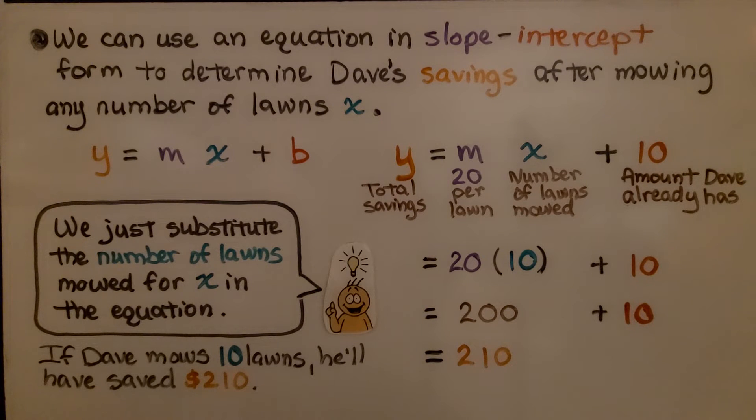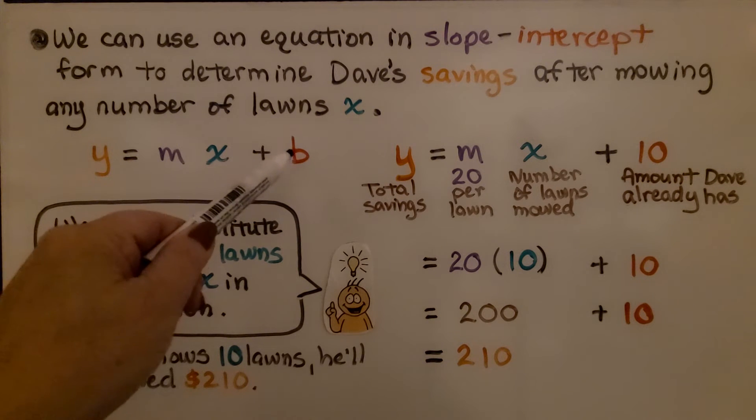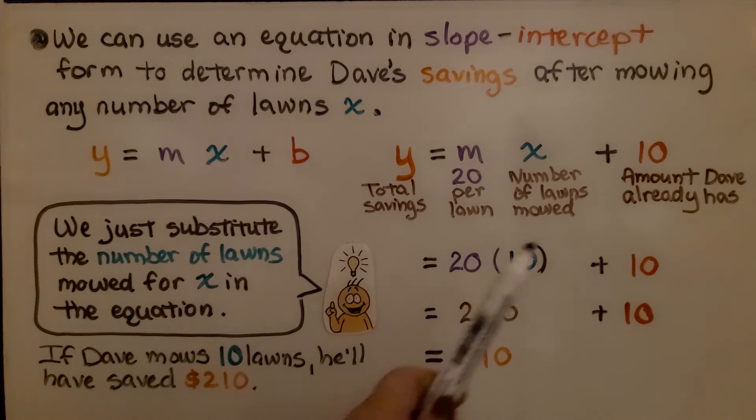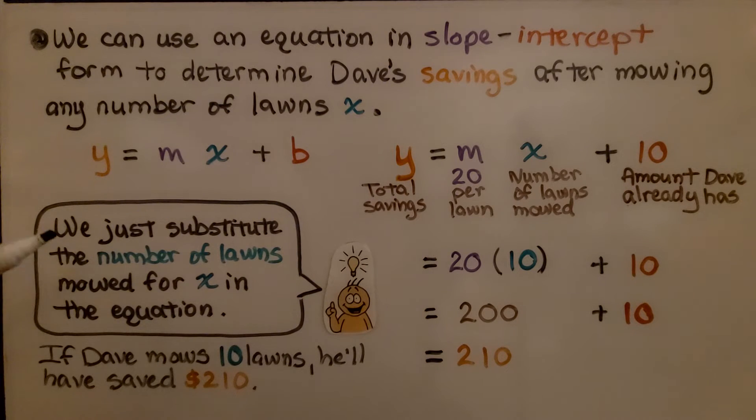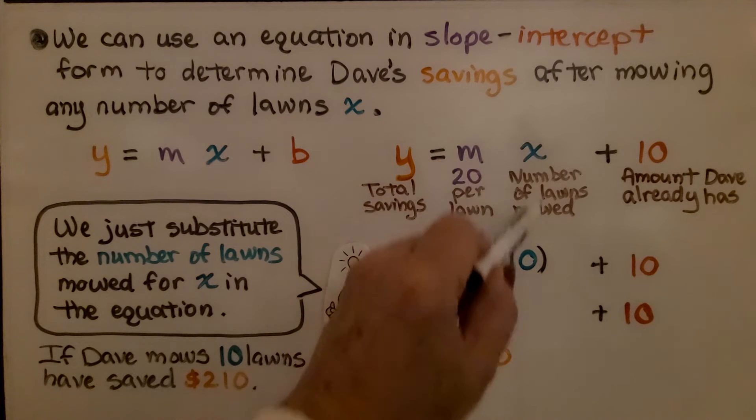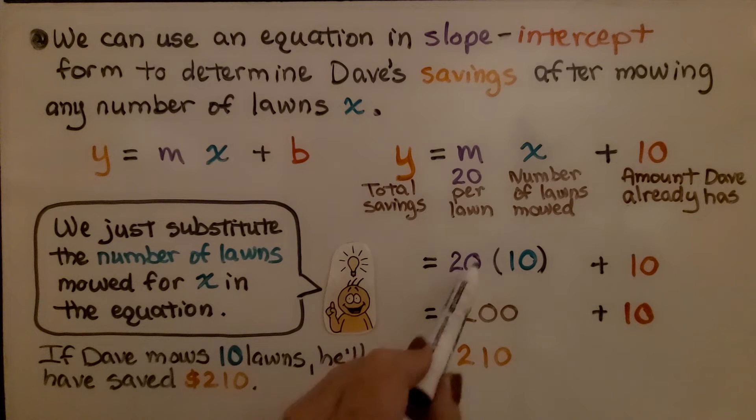We can use an equation in slope-intercept form to determine Dave's savings after mowing any number of lawns x. Here we have our equation in slope-intercept form. We know that the initial value b is 10. He already had $10 before he started mowing any lawns, so we put a 10 here. If he mowed 10 lawns, we'll put a 10 for x. We know he's getting $20. That was our slope. We do 20 times 10 is 200, add the initial 10 he had. That's $210. We just substitute the number of lawns mowed for x in the equation. If Dave mows 10 lawns, he'll have saved $210.